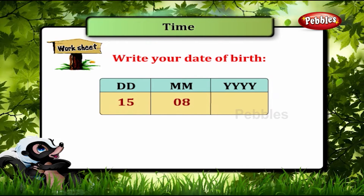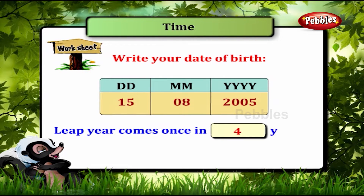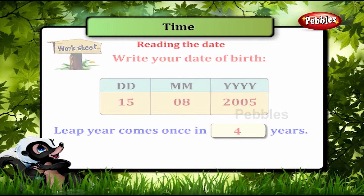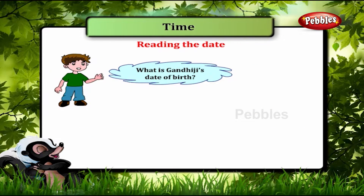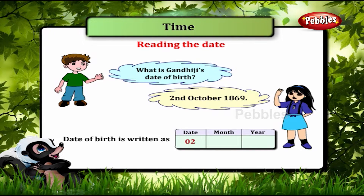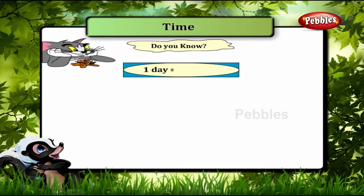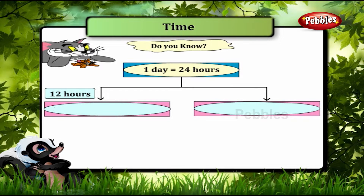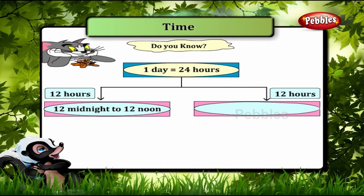15.8.2005. The leap year comes once in 4 years. What is Gandhiji's date of birth? 2nd October 1869 — it is written as 02.10.1869. 1 day equals 24 hours: 12 hours from 12 midnight to 12 noon, and the next 12 hours from 12 noon to 12 midnight.